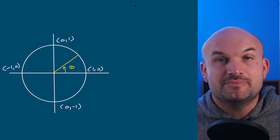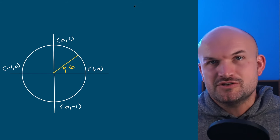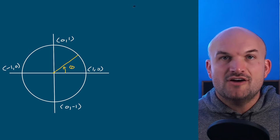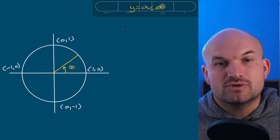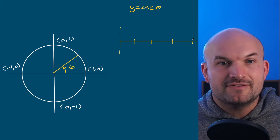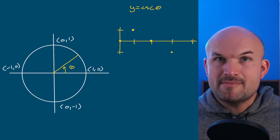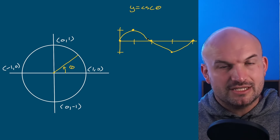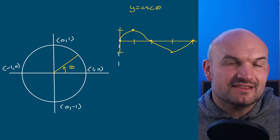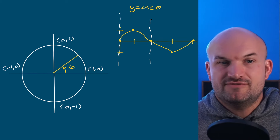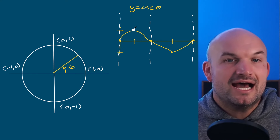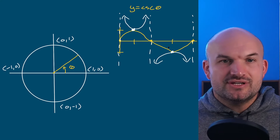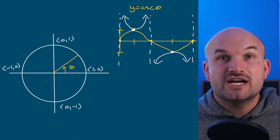The final two graphs — cosecant and secant — are best approached by understanding they are the reciprocals of sine and cosine. For cosecant, I'll first quickly graph sine from memory, plotting and connecting its points. Then, wherever sine equals zero — at every x-intercept like zero, pi, and two pi — cosecant is undefined, so I place asymptotes there. Where sine equals 1, one-over-one is still 1, so cosecant and sine share those points. The cosecant graph then goes in the opposite direction from those shared points.